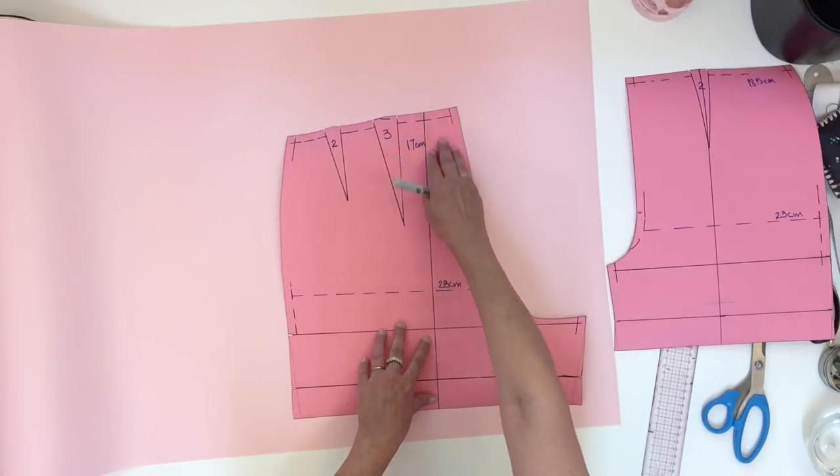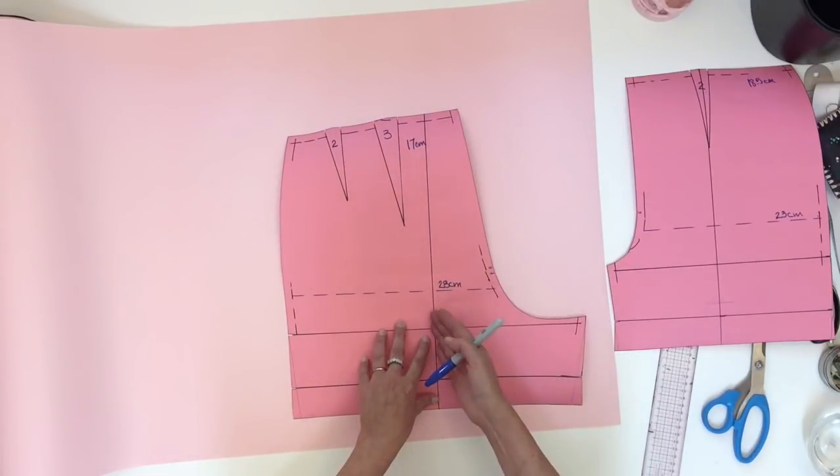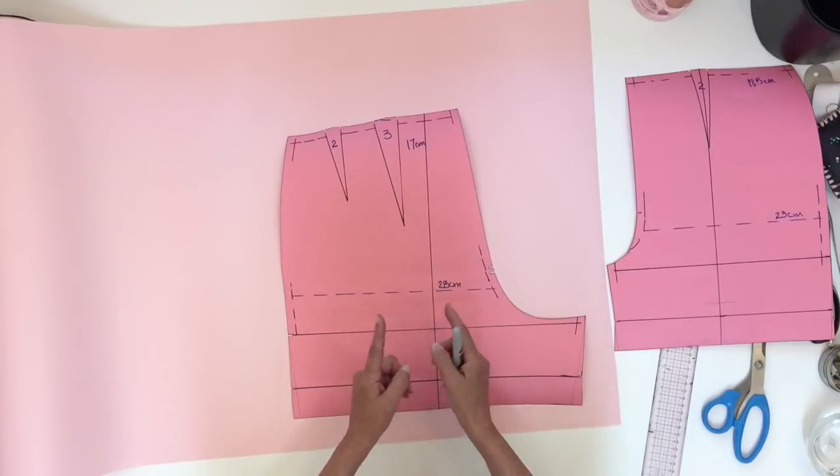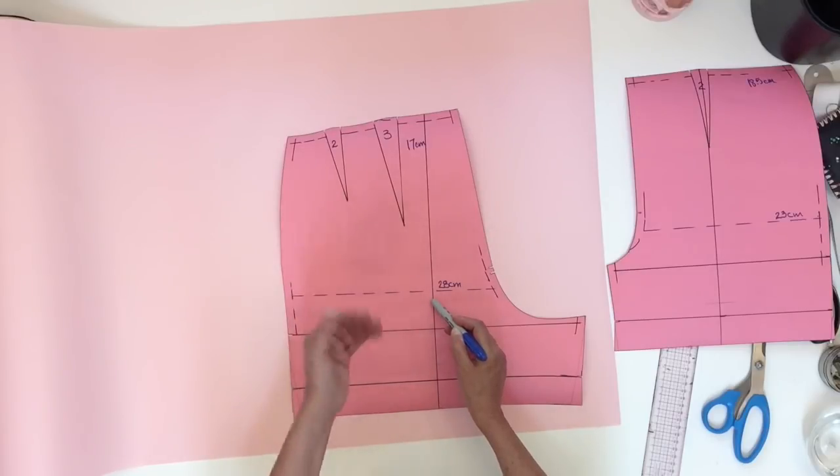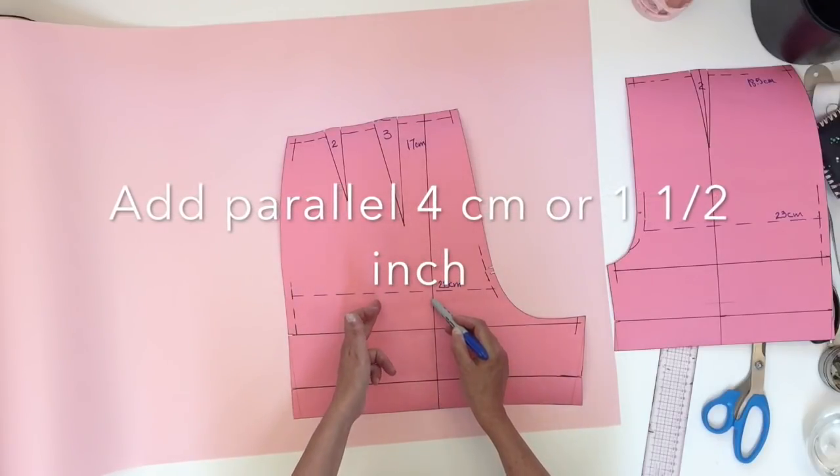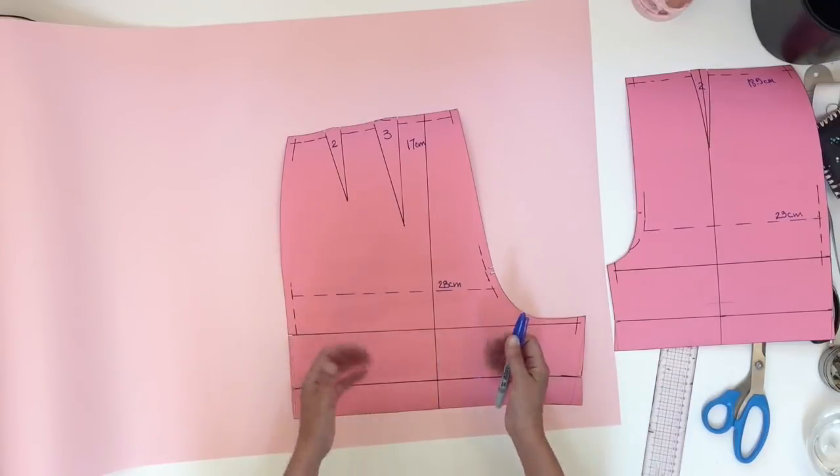So I'm going to trace the first part of the short then I'm going to move for the second part. Last time we moved parallel two centimeters and today I'm going to move parallel four centimeters because I want it a little looser.